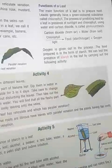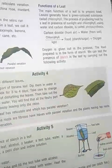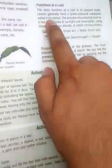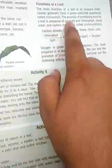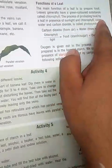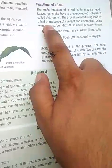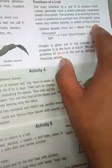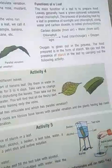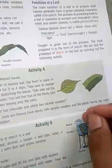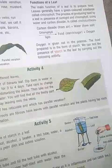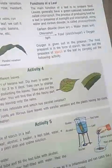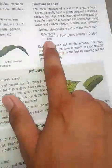The main function of the leaf is to prepare food. Leaves generally have green color due to the presence of chlorophyll. The process of producing food by leaves in the presence of sunlight and chlorophyll, using water and carbon dioxide, is called photosynthesis. Photosynthesis is the process in which green plants make their own food in the presence of sunlight and chlorophyll, using CO2 and water.